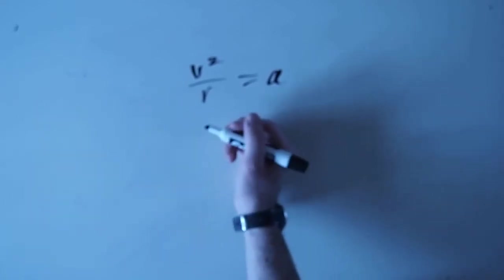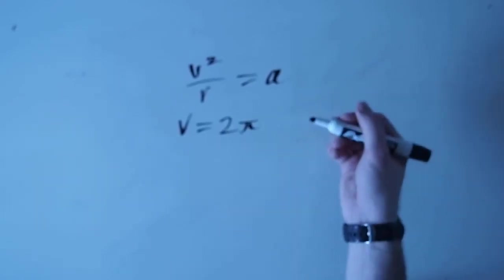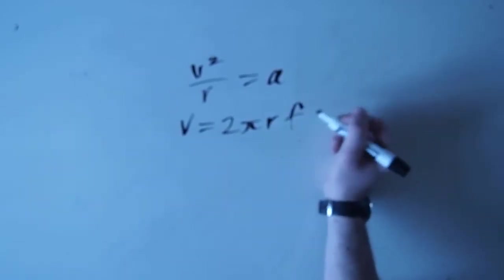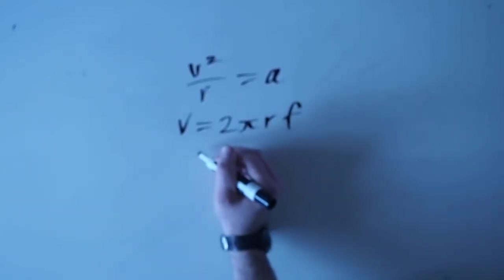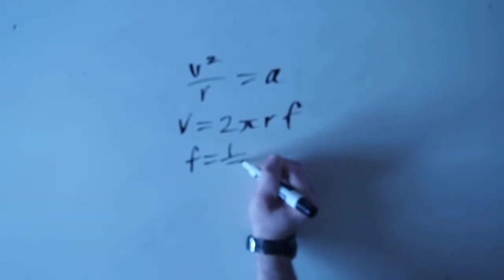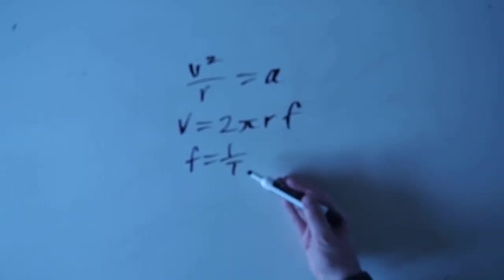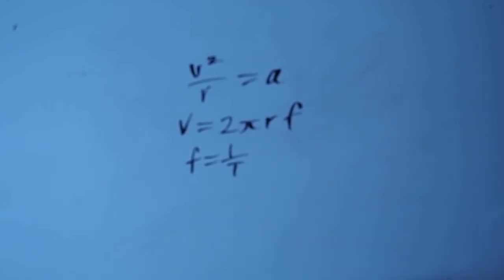But what is v? v is equal to 2 pi r times f, which is how many times it goes around in a certain amount of time. And one more thing you need to know is f is equal to 1 over t. Because we don't have frequency, we have period, how long it takes the Earth to rotate one time. So we need to use period instead of frequency.